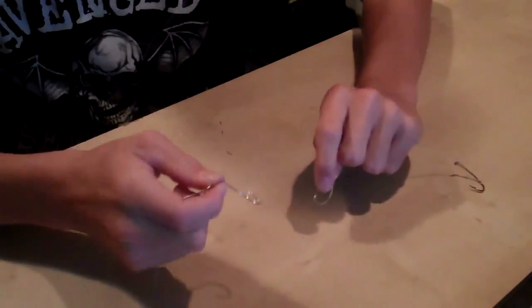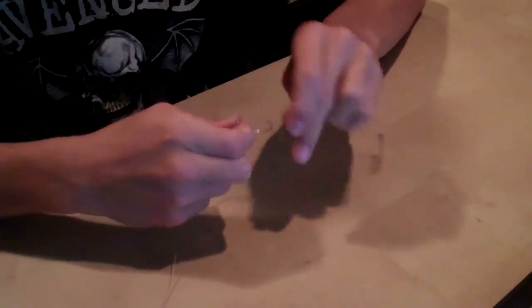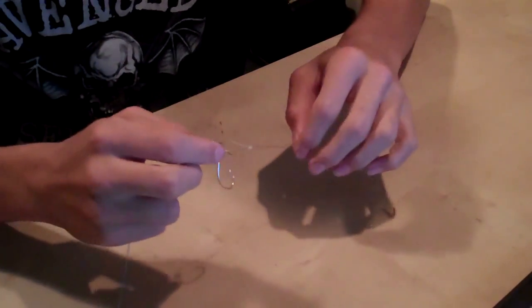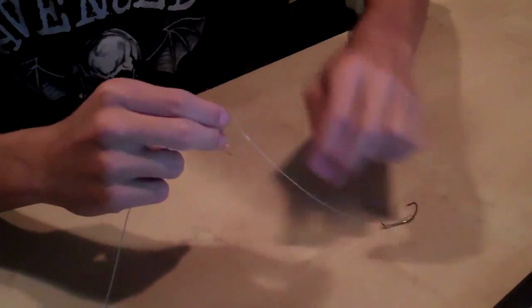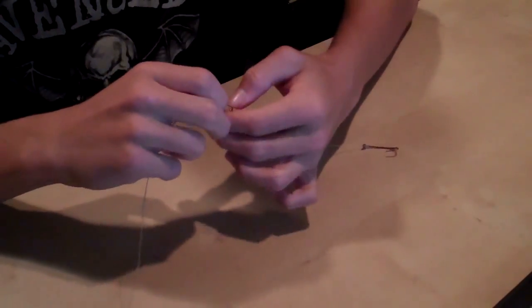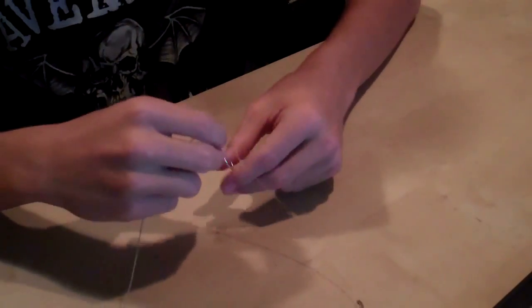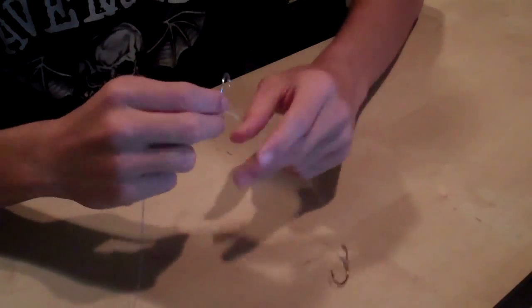So what I'll do is I'll take the loop of the snell hook rig and I'll put that right through the swivel as well. And I'll close it up. And then when I have my bait rigged, you know, it doesn't have to be a six inch.